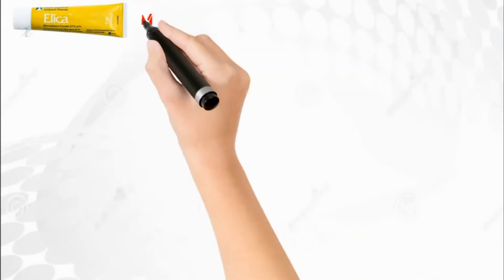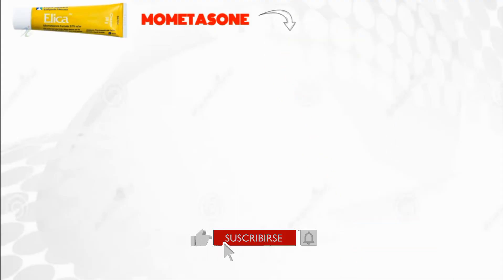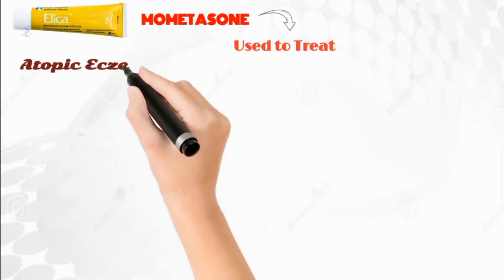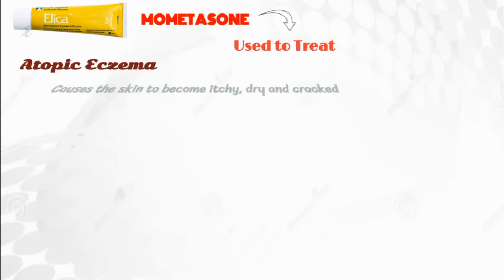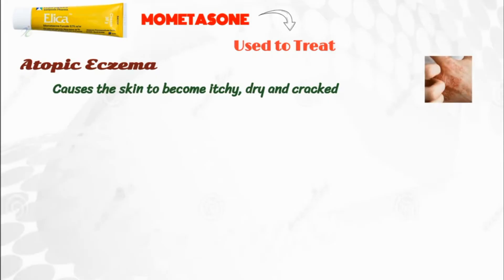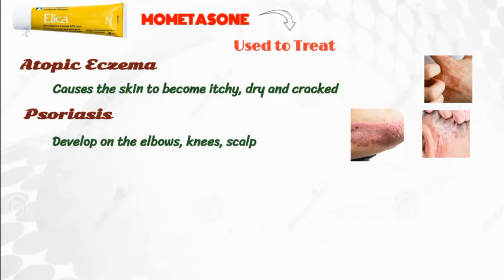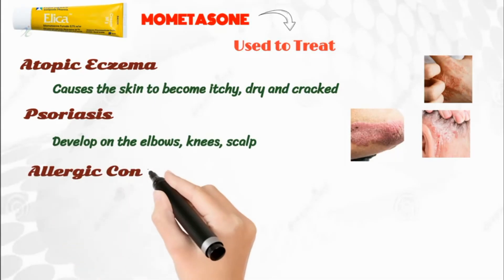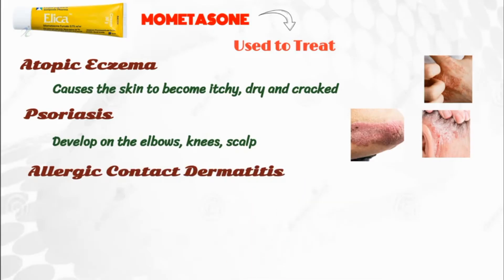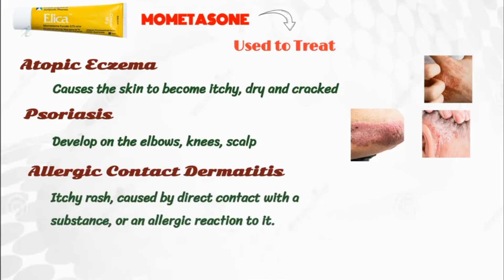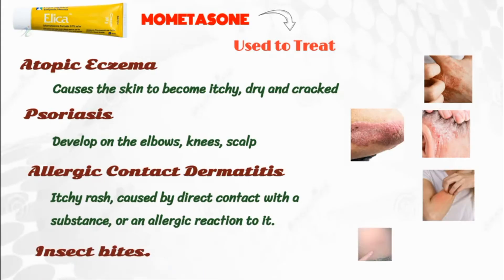Elica cream contains mometasone, which is a potent corticosteroid, and is used to treat the following conditions: atopic eczema, a condition that causes the skin to become itchy, dry, and cracked; psoriasis, where itchy scaly pink patches develop on the elbows, knees, scalp, and other parts of the body; allergic contact dermatitis, which is an itchy rash caused by direct contact with a substance or an allergic reaction to it; and insect bites.